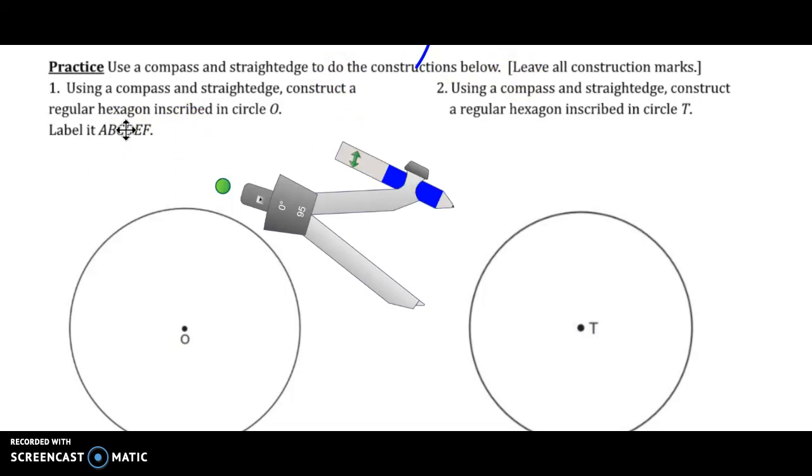In both of these examples, we are constructing a regular hexagon. In practice number one, we are going to actually label it with the given values, and those must go in order. I can't jump around on the hexagon. So first step is I'm going to draw a radius.